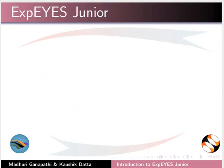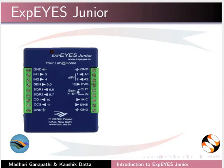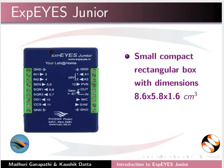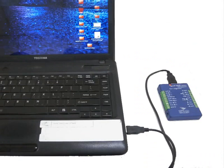The Xpice Junior device looks like this. It is a small, compact, rectangular box with dimensions 8.6 x 5.8 x 1.6 cm³. It weighs around 60 grams. The device can be connected to the system through a USB port.